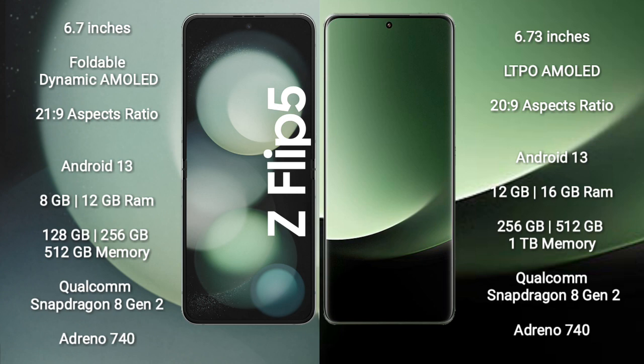Xiaomi 13 Ultra comes with 12GB or 16GB RAM, and 256GB or 512GB or 1TB internal storage. It is also powered by a Qualcomm Snapdragon 8 Gen 2 processor with an Adreno 740 GPU.